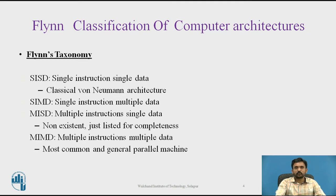Flynn's Taxonomy is based on these two keywords and divides into: Single Instruction Single Data (SISD), Single Instruction Multiple Data (SIMD), Multiple Instruction Single Data (MISD), and Multiple Instruction Multiple Data (MIMD). We will check each of these Flynn's Taxonomy classifications one by one in the next slide.